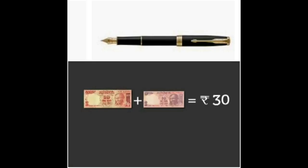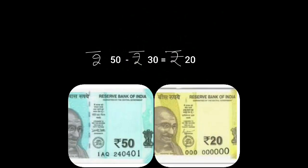One more example: suppose we want to buy a pen. We have a 20 rupees note and a 10 rupees note, so we give 20 plus 10, which is rupees 30. Or, suppose I have only rupees 50 — I give the shopkeeper rupees 50 and he will give me back rupees 20, because rupees 50 minus rupees 30 equals rupees 20.